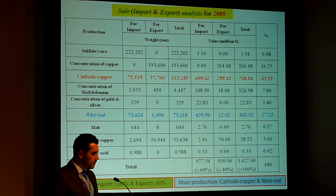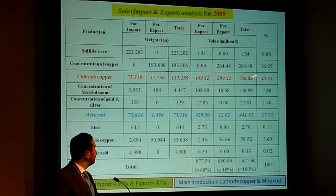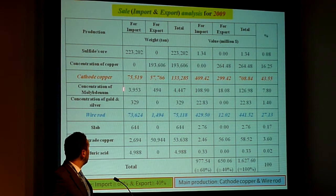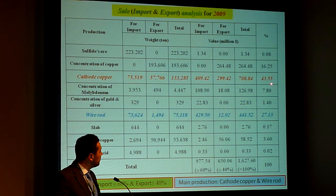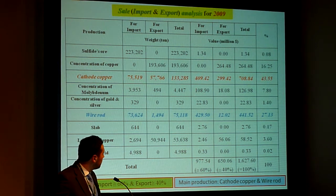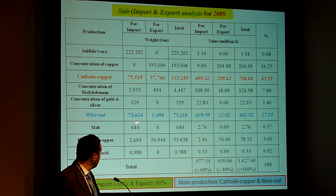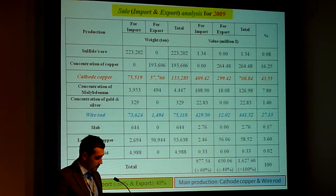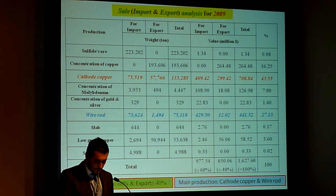Half of the sales were due to the sale of Catholic copper, 43.5%, and around a third were due to water loss here, 27%.